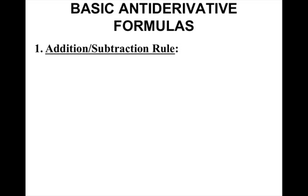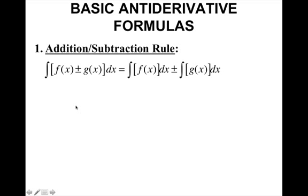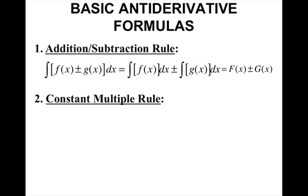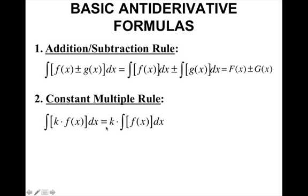Some basic antiderivative formulas. The first is the addition/subtraction rule — if you take the integral of two functions that are added or subtracted together, you can split them up and take the integral of each one separately, giving you F(x) plus or minus G(x). The constant multiple rule means that if we have a constant multiplying a function, we can pull out the constant, take the integral of the function first, and then multiply by the constant — in other words, the constant times the antiderivative big F.